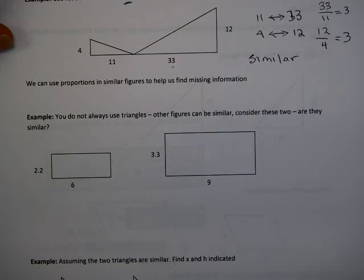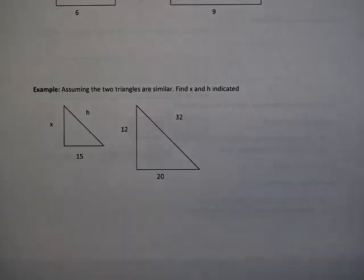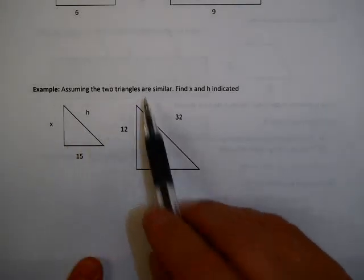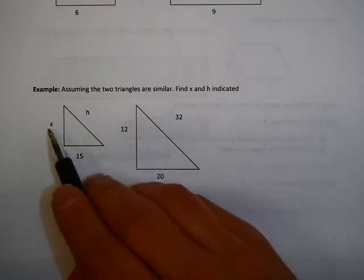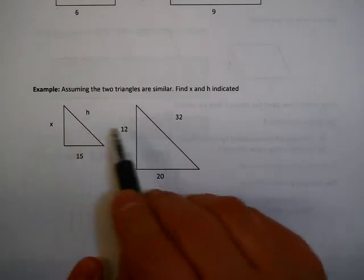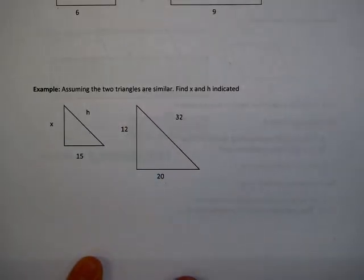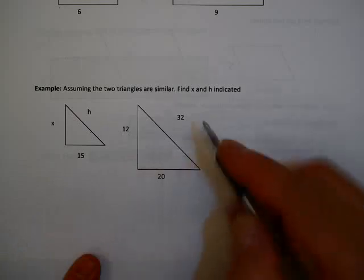Now, why do we care? Well, one reason we care is we can often find missing parts if triangles are similar. For example, here are two triangles, and we're saying these triangles are similar. That means we're assuming there is a scale factor that takes x to twelve, and fifteen to twenty, and h to thirty-two. So, our question is, how do we find h and x?